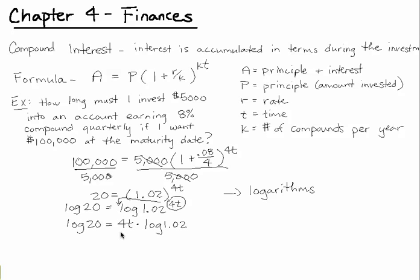And now we'd go about solving for T by dividing the 4 and log of 1.02 on both sides. And you can type that directly into your calculator, log of 20 divided by 4, and then divided by log of 1.02.